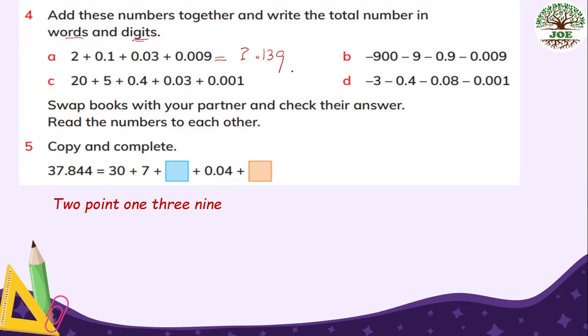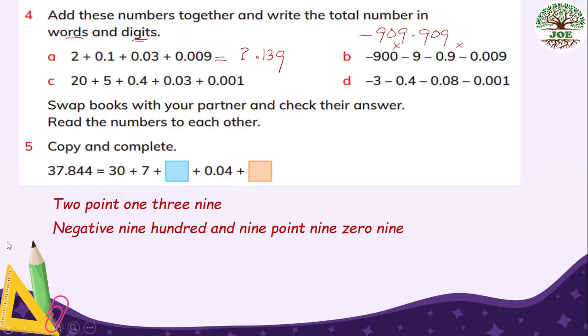Part B, negative 909. Here is 10. Spaces missing. 0.90.009. Spaces missing. Our number is negative 909.909. In words. Negative 909.909.